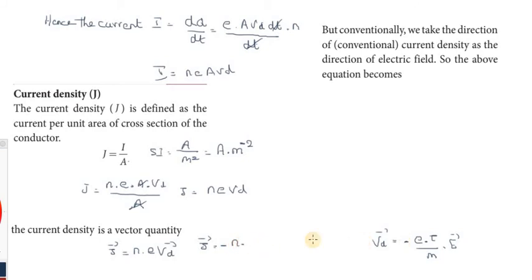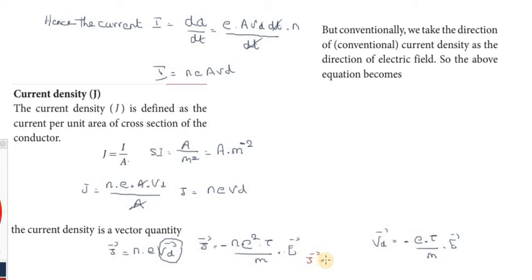Substituting the drift velocity into the current density expression: j vector equals sigma into E vector, where sigma equals n into e squared into tau divided by m. This sigma is the conductivity.